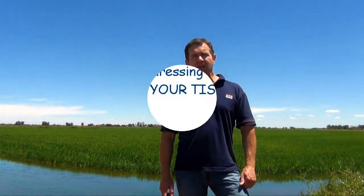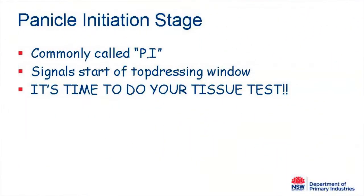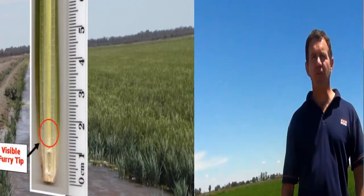In other words, when the plant stops making new leaves and starts to form the seed head, or as we prefer to call it, the panicle. We call this stage panicle initiation, or PI for short. This video will show you how to identify PI in the field, so you'll know when to take your plant samples for the nitrogen tissue test.